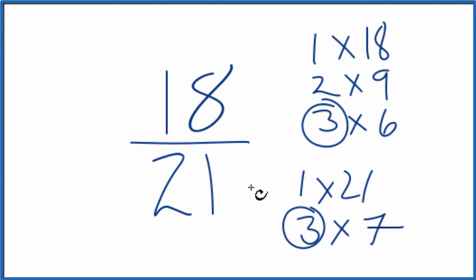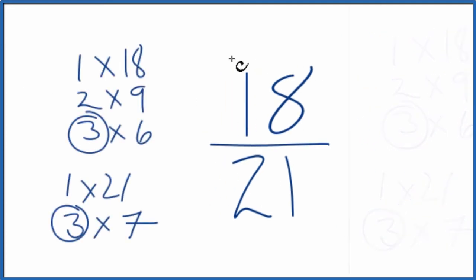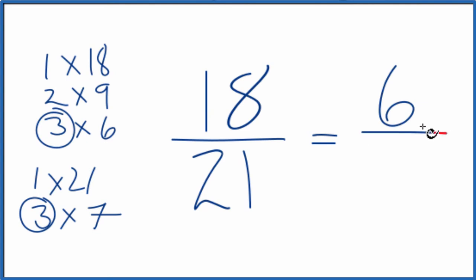Let's move these over here. So 18 divided by 3, that's 6, and then 21 divided by 3 is 7. So we've simplified 18/21 down to 6/7, and we can't reduce or simplify this any further.